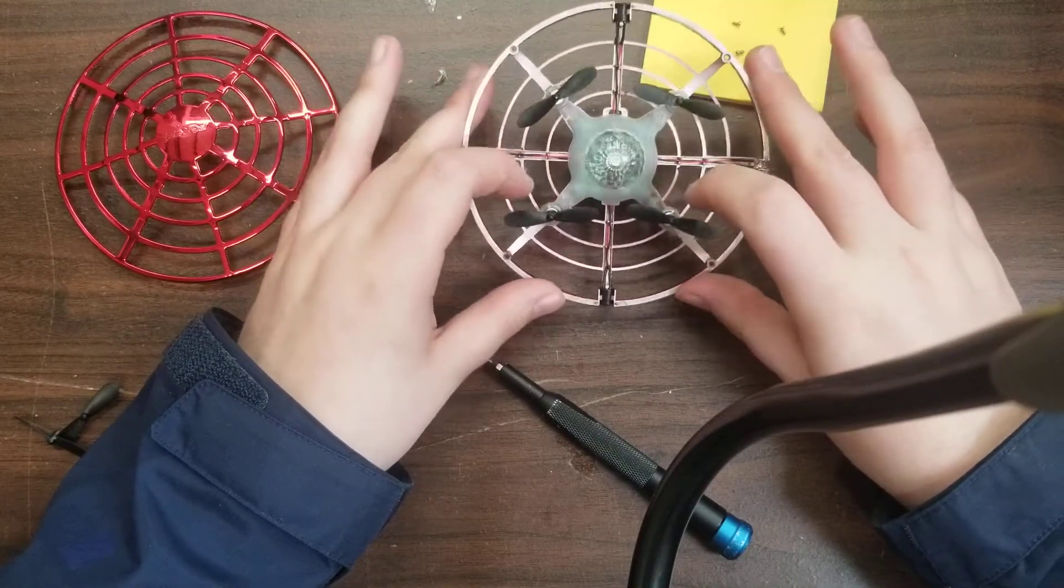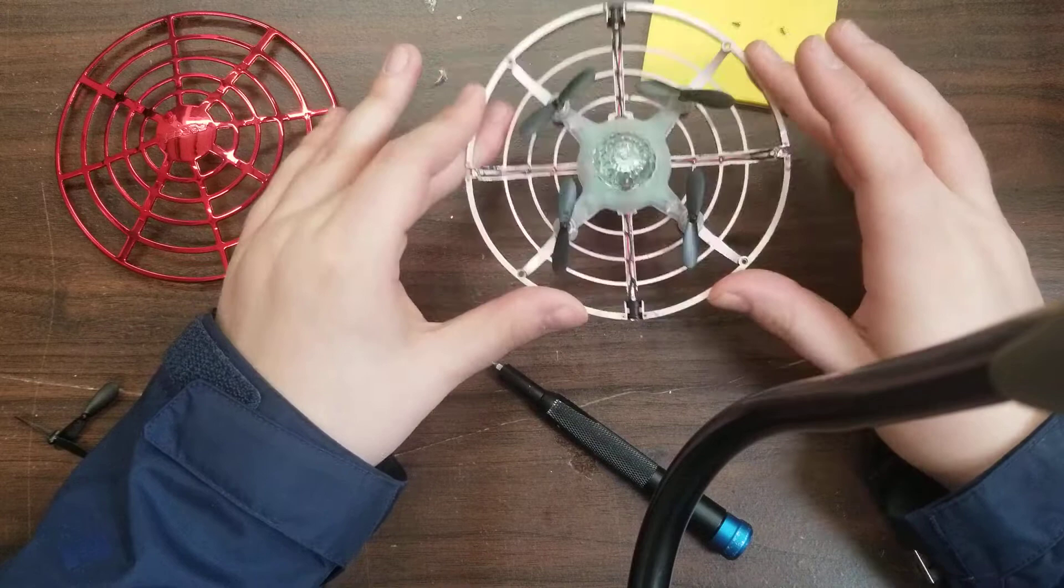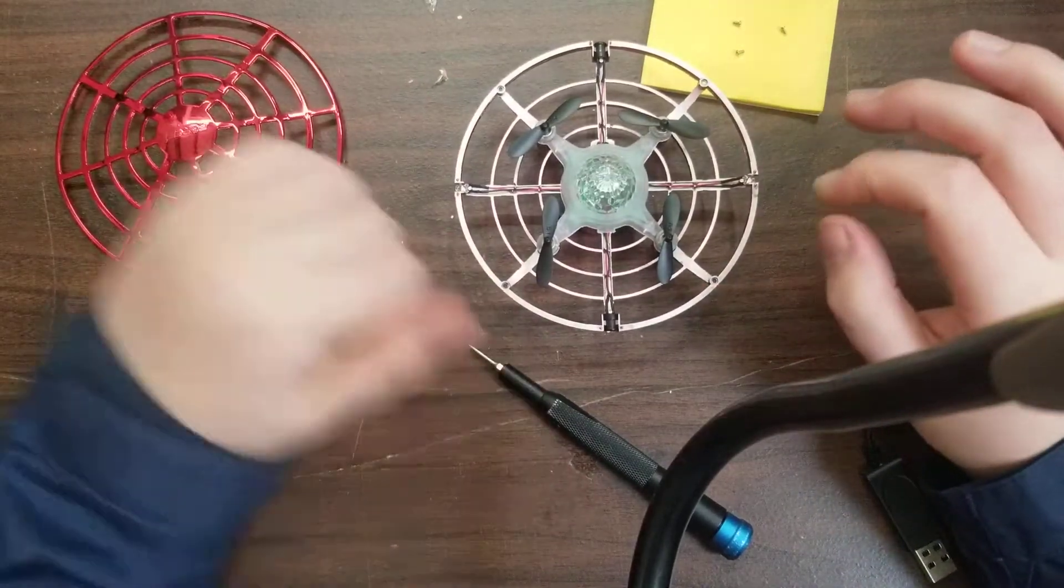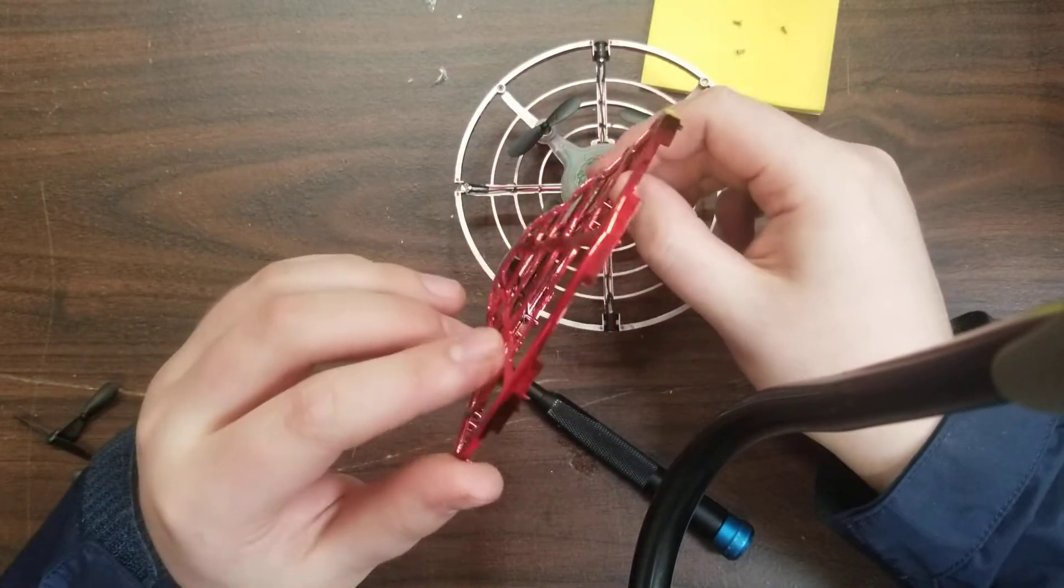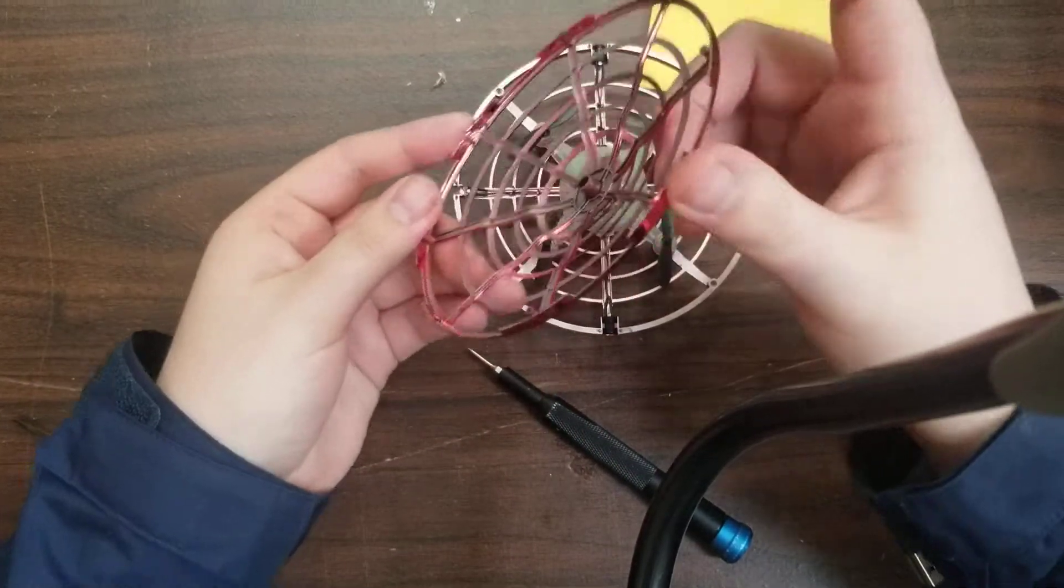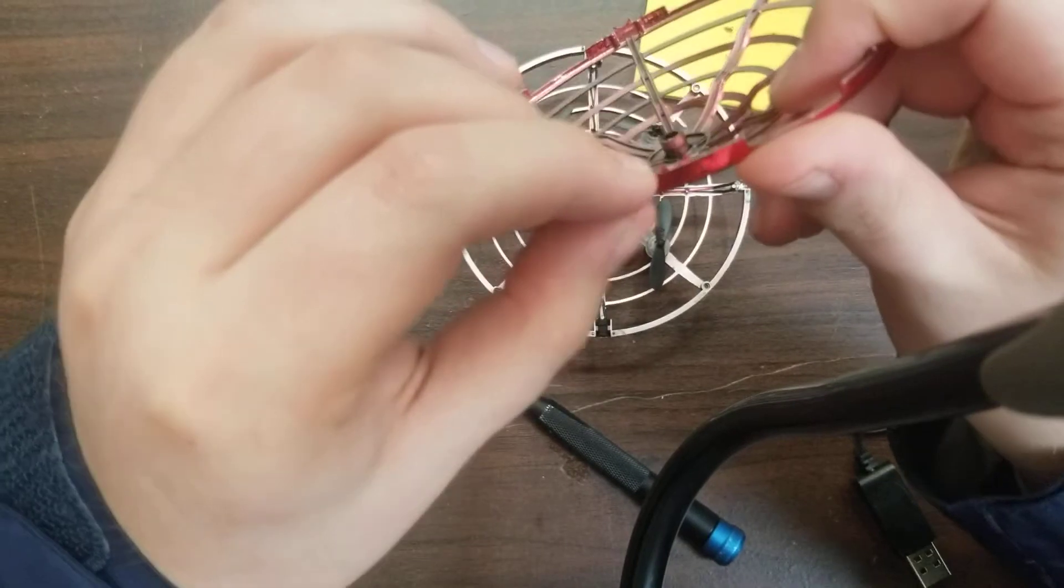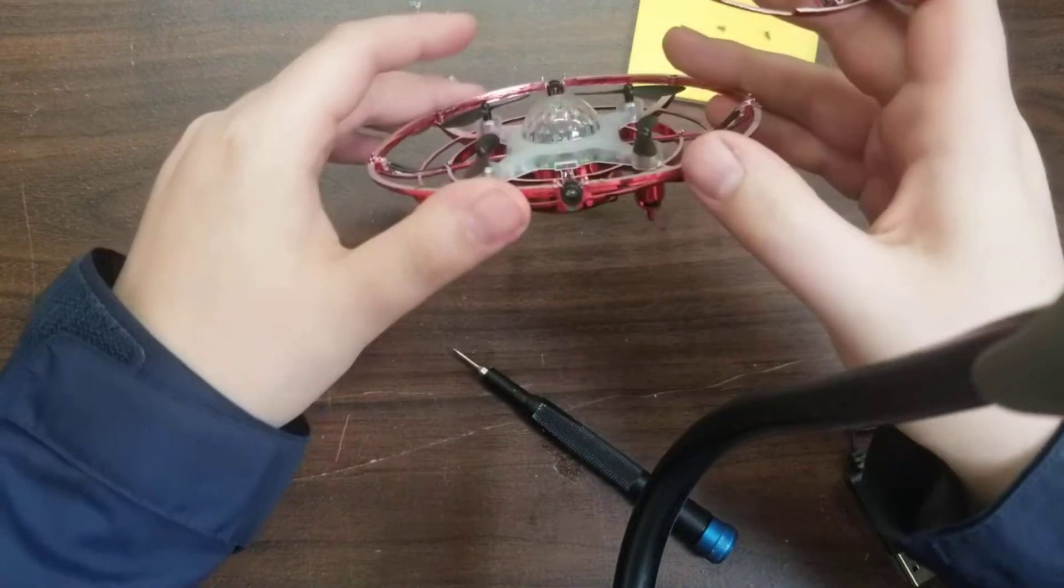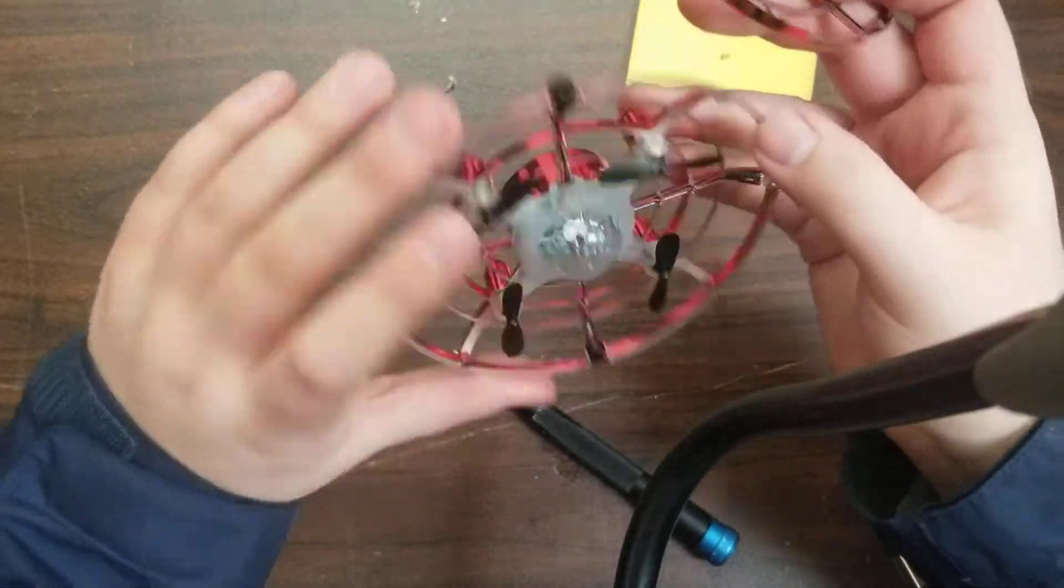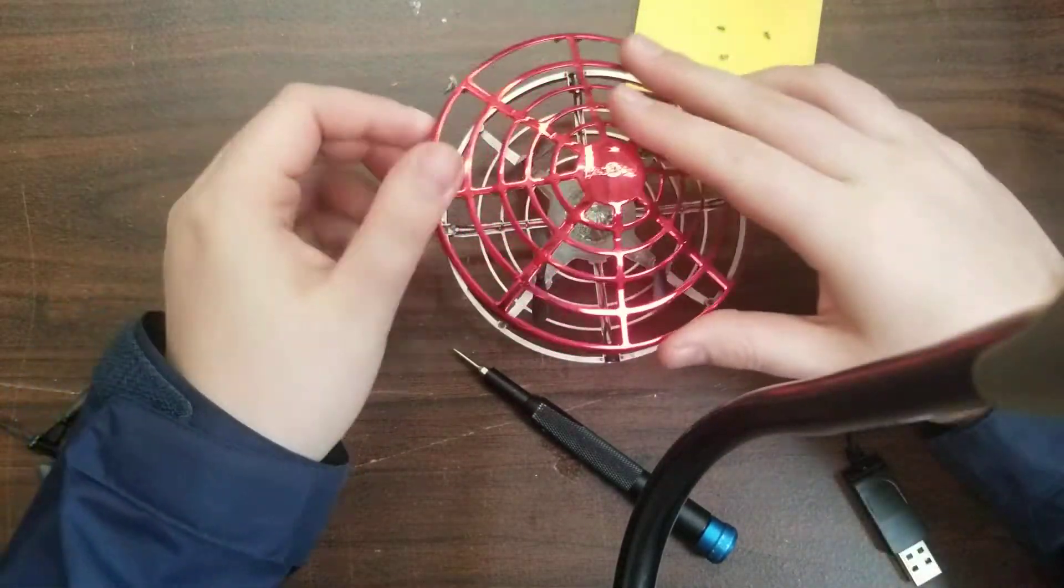I'll double check the orientation before I seal everything back up. But now all that we have to do is put the shell back together. And look for the little, you can kind of see, little shrouds for the lights here. Make sure those go in the right spots.